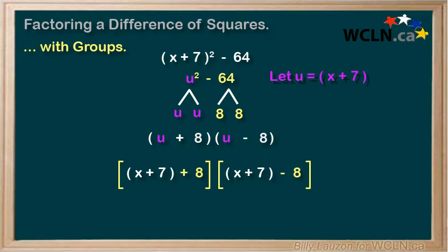We now need to simplify within each square bracket. x + 7 + 8 gives us x + 15, and x + 7 - 8 gives us x - 1.